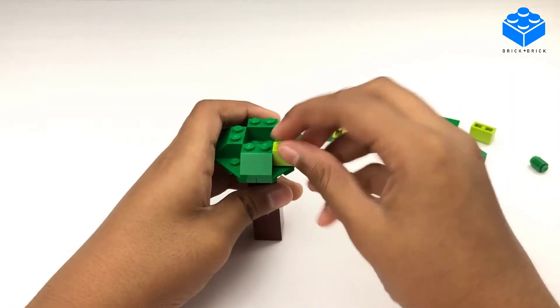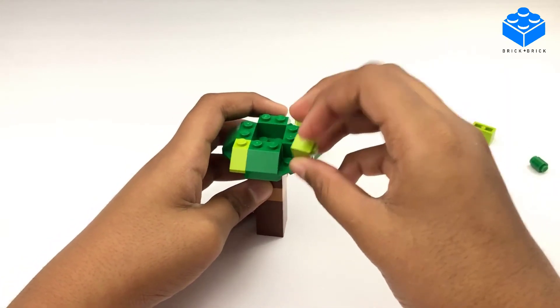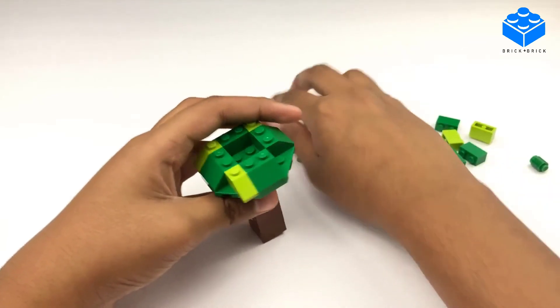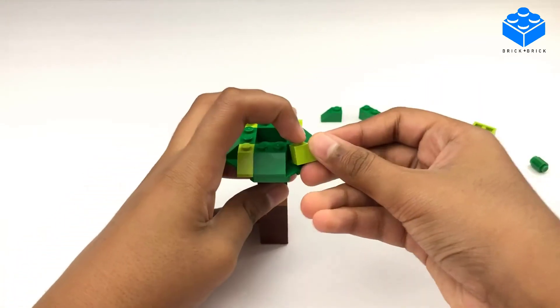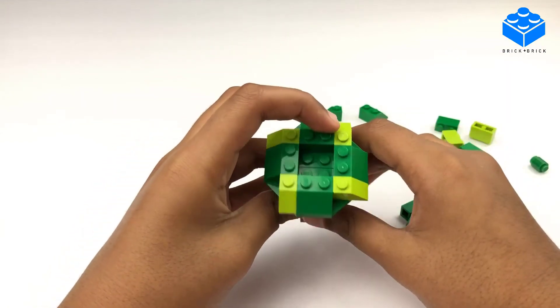And then, arrange your two by one by two slopes and the same arrangement as we did last time with our second tree. And it should look like this.